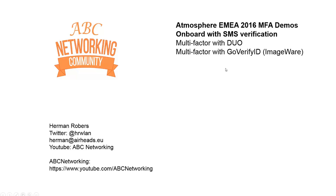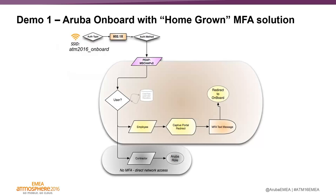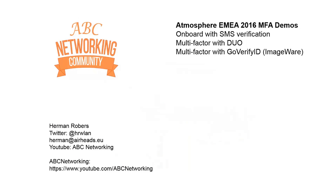Let's start with the first one: onboard with SMS authentication. I've prepared a demo with the typical onboarding process — single SSID onboarding — where you connect to the corporate SSID with your username and password. ClearPass will detect that you are not authenticated on a known device and must be onboarded to get a client certificate. As an employee, you are redirected to the onboarding portal where you enter your username and password, and new in ClearPass 6.6, you are triggered for SMS text validation. After that you are redirected to the onboard process which will enroll a client certificate to your mobile device.